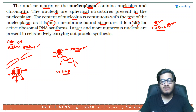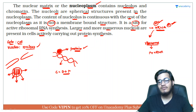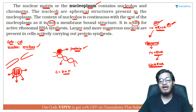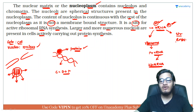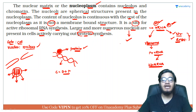Larger and more numerous nucleoli are present in cells actively carrying out protein synthesis. You know the role of rRNA in protein synthesis — ribosomes contain an aggregation of proteins along with rRNA. The 23S rRNA acts as a peptidyl transferase enzyme, so this RNA also acts as both a structural and enzymatic component. Therefore, in cells where protein synthesis is greatly required, the nucleolus must be present — and you can find larger and more numerous nucleoli in those cells.